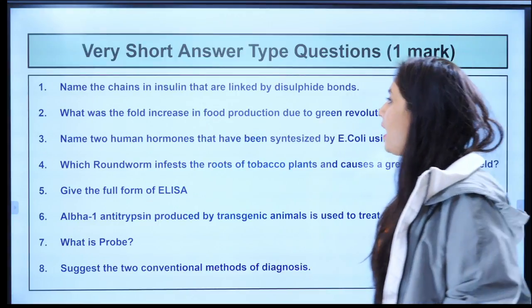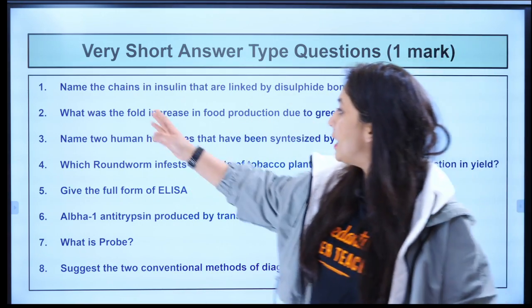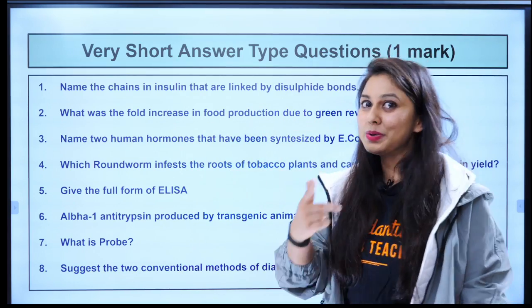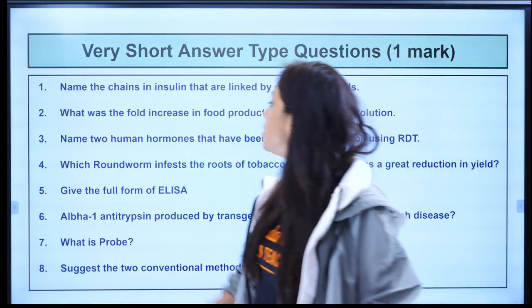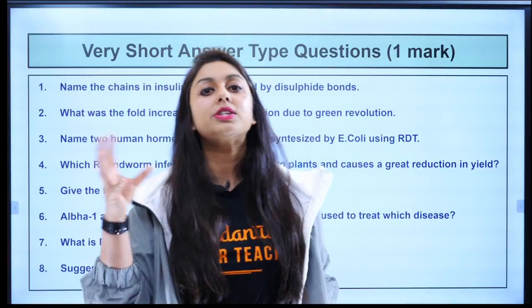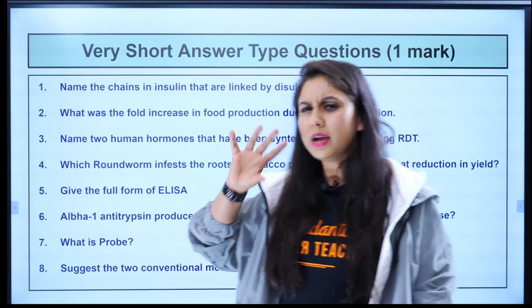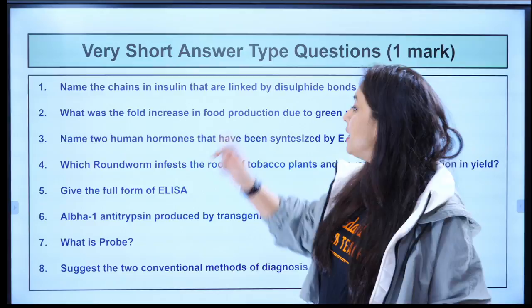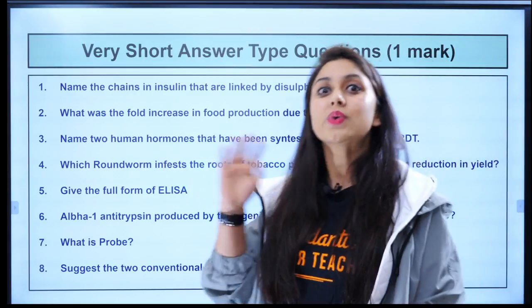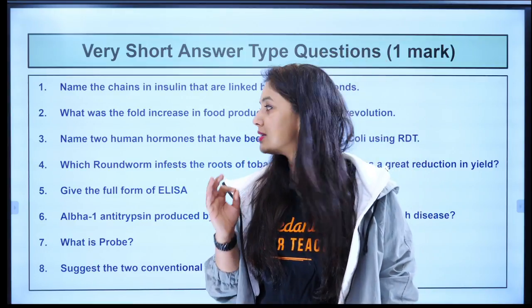So first we have very short answer questions of one mark. The first question is very easy: name the chains in insulin that are linked by disulfide bonds — hint, there are only two. Next question: what was the fold increase in food production due to the Green Revolution? This chapter starts with green revolution. Next: name two human hormones synthesized by E. coli using rDNA technology — one is very famous, the second one is a challenge for you.